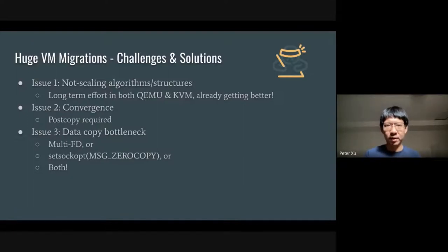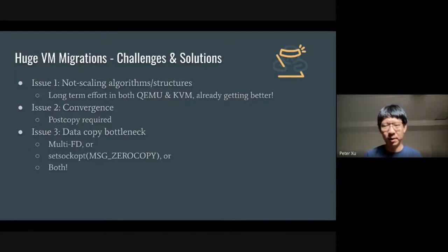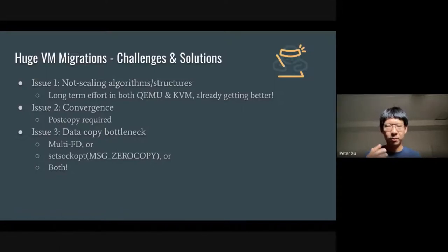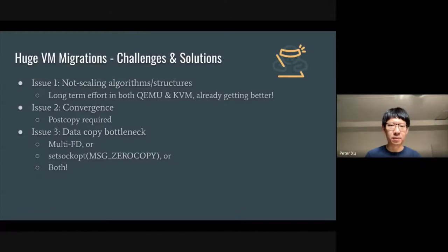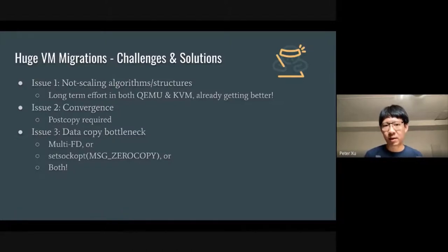The first challenge is the not-scaling algorithm issue. I think it's a long-term effort, not only in QEMU but also in KVM, and it's getting better — but we may still need more work. The second one is convergence, which could be a very important factor for huge virtual machines. As we don't have a chance to throttle those workloads — even if we have dirty ring to provide better granularity on throttling — it may not work, because even if we throttle the worker threads, it will affect performance inside the guest.